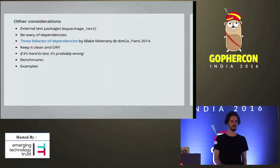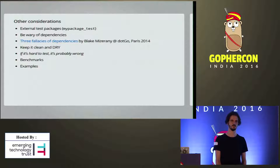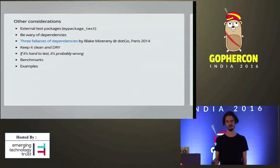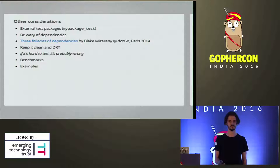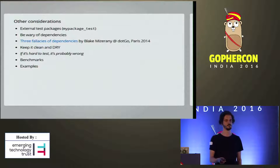Some other considerations: many times you can run into the problem of cyclic dependencies in tests, in which case it's good to have an external test package. For example, if your package is called mypackage, you would call this mypackage_test. Not only to avoid cyclic dependencies, but when you write an API, you have the perspective of the developer. When you write external tests, you assume the perspective of your API's user, which is a good perspective to have because that's what you're ultimately interested in.